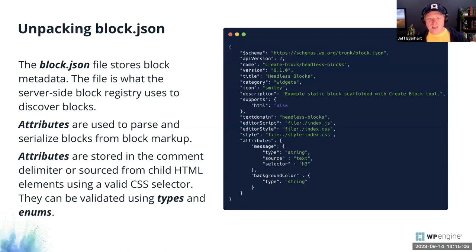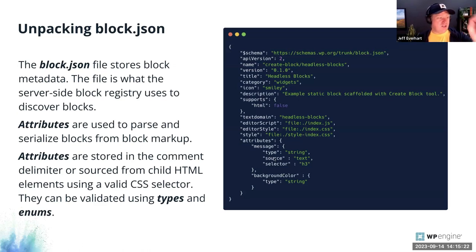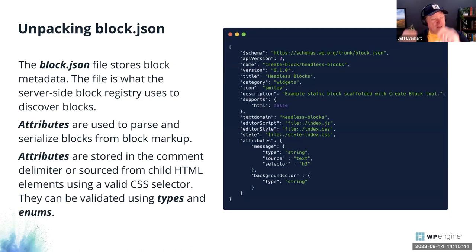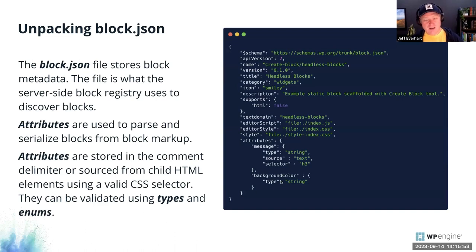There are a couple of ways to source these attributes. We can pull attributes from the JSON-like data structures inside the comment delimiters, or we can say an attribute is stored inside the block's HTML and give it a selector. For example, if I have an H3 with a message inside it, the block will know to find the H3 tag inside the markup and pull that data out. There's a lot of flexibility in where you store data and how you construct your block. You can also do validation and add enums to make the CMS editor look nice and usable for clients.